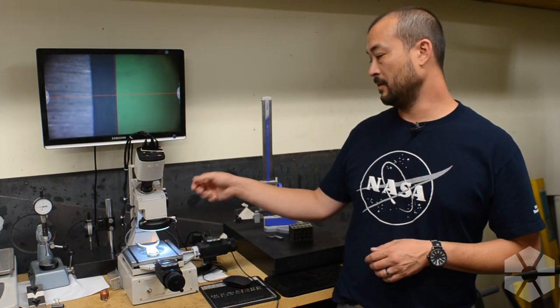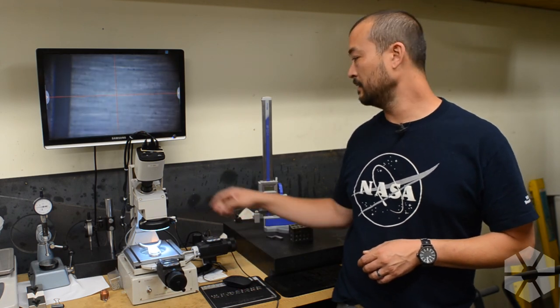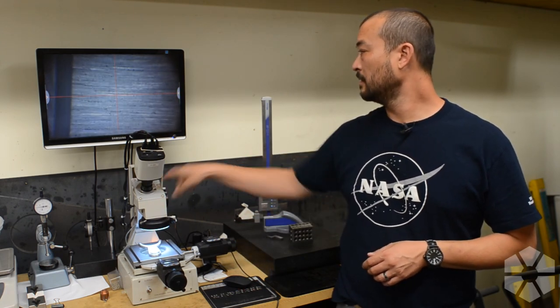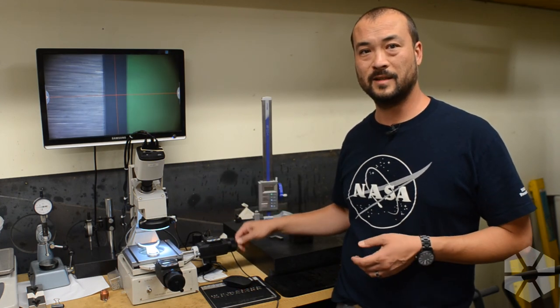And sometimes, you know, you want to see the top surface of your part, like here. Sometimes you want to see the edge of the part, which is where the backlight comes in handy.